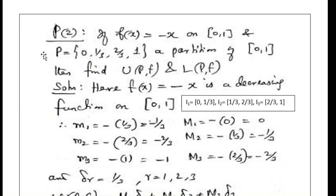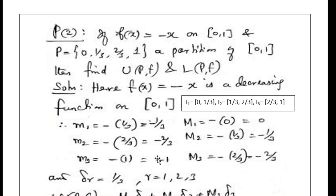Small m2 is the infimum of f(x) in the second sub-interval. In place of x, we keep 2/3. Therefore it is f(2/3) = -2/3, which is m2. Small m3 is the infimum of f(x) in the third sub-interval, namely the closed interval [2/3, 1]. Since we find the infimum for a decreasing function, we keep x = 1, giving -1. Thus the infimum of f in i1, i2, i3 are -1/3, -2/3, and -1 respectively.